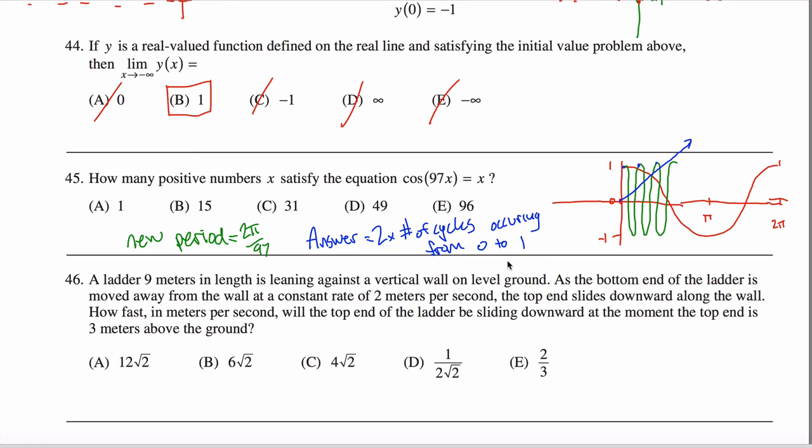So, how many cycles occur from zero to one? Well, originally, from zero to two pi, one cycle occurred. But then I stretched this thing, or I guess squished it kind of horizontally.